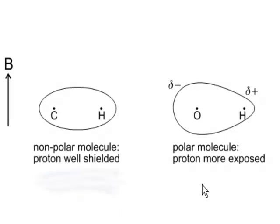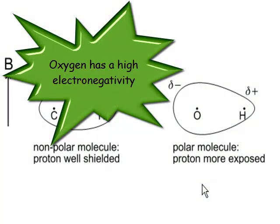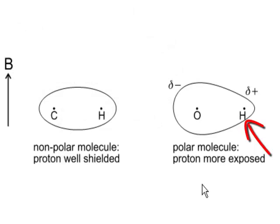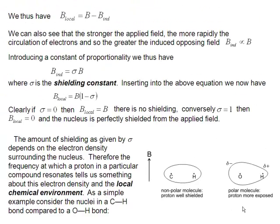On the other hand, our greedy oxygen atom here has pulled all of the electron density towards it. It's got a high electronegativity. So our proton here is going to be, relatively speaking, more exposed to the applied field. It's not going to be shielded by the electrons because those electrons have all gone and clustered around the oxygen atom.